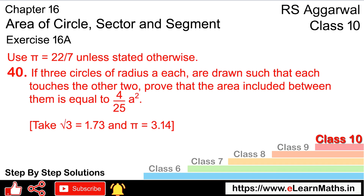Let's do question number 40 of exercise 16A, that is area of circle. Question number 40 is: if three circles of radius a each are drawn such that each touches the other two — we have drawn that each circle is touching the other two — then prove that the area included between them is equal to 4/25 * a². We have to prove that, taking root 3 as 1.73 and pi as 3.14.